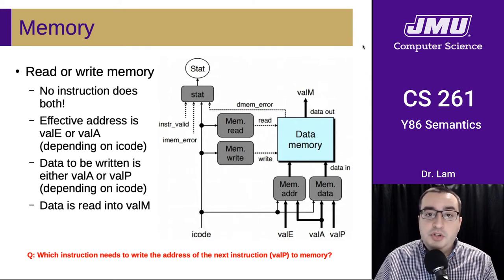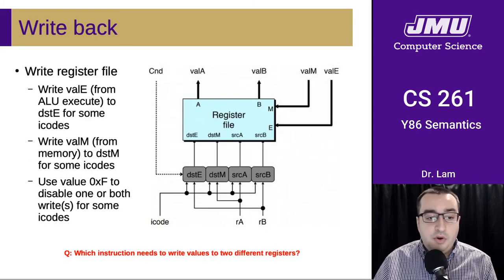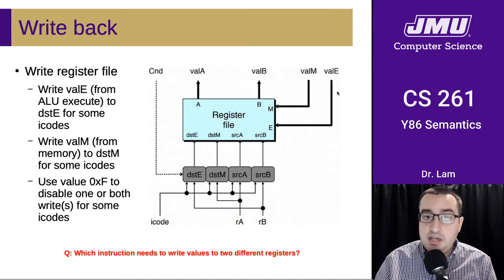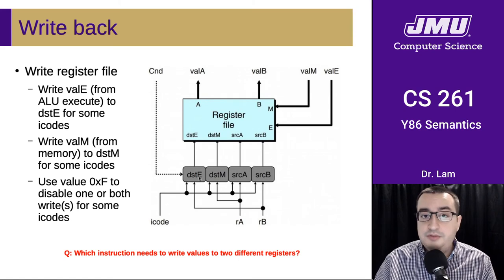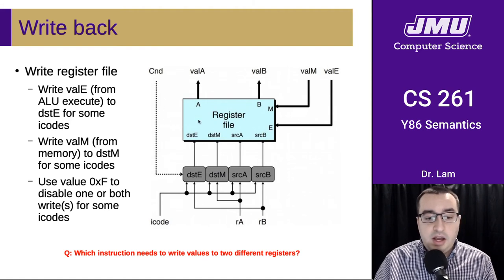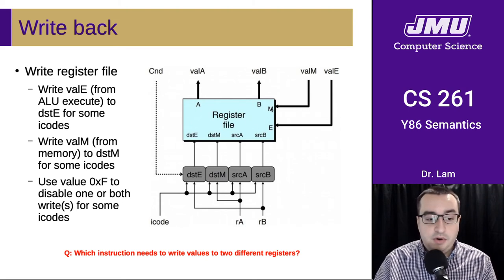Now we come to the second part of the register file in our diagram. The write-back phase is where we take any register values we need to save and write them back to the register file — this is going to be ValE if we're coming from the ALU, or ValM if we're coming from memory. The actual register IDs come from the fetch phase of the CPU. Sometimes we'll also need the condition signal to determine whether we're doing a conditional move, and we can use that value to disable one or more writes for some of the iCodes.